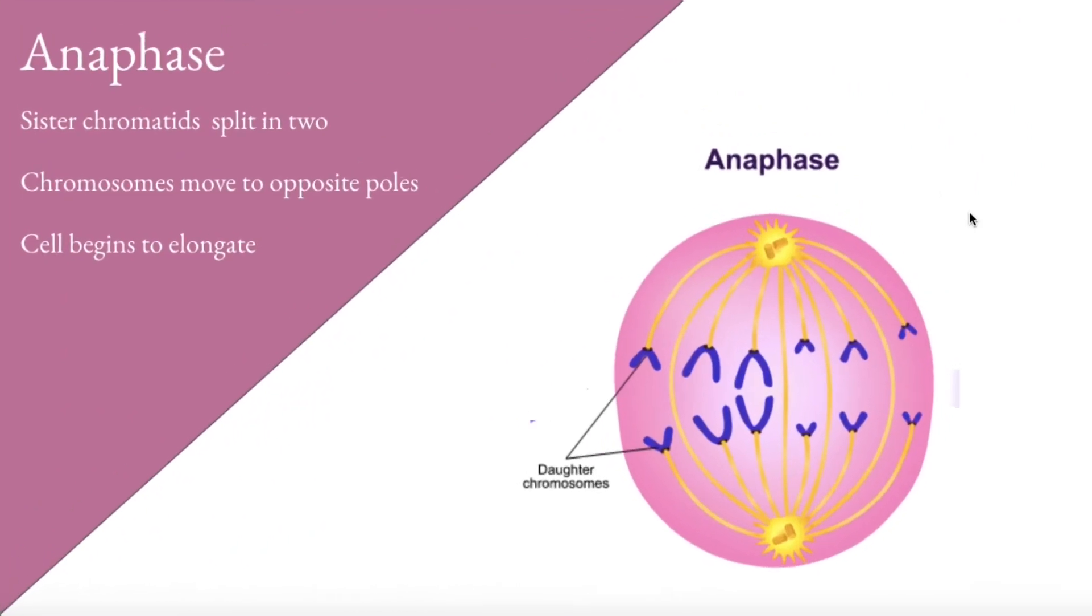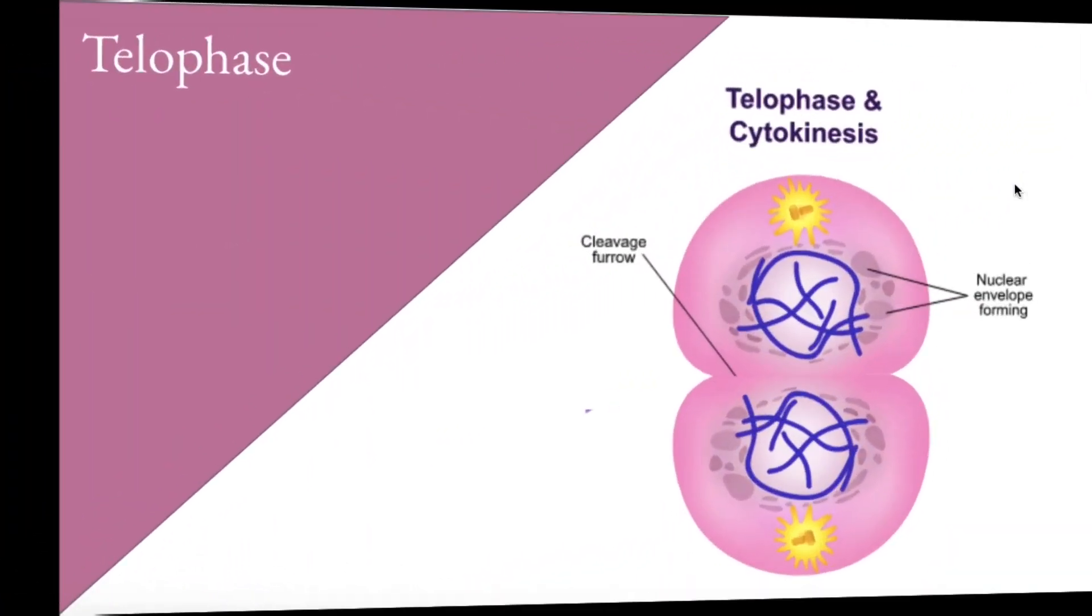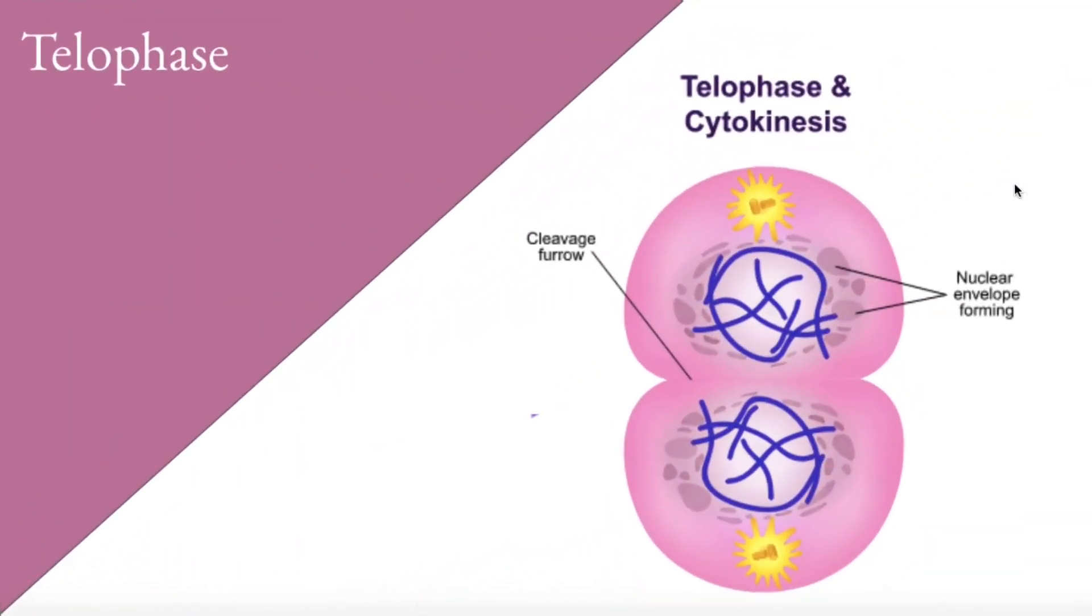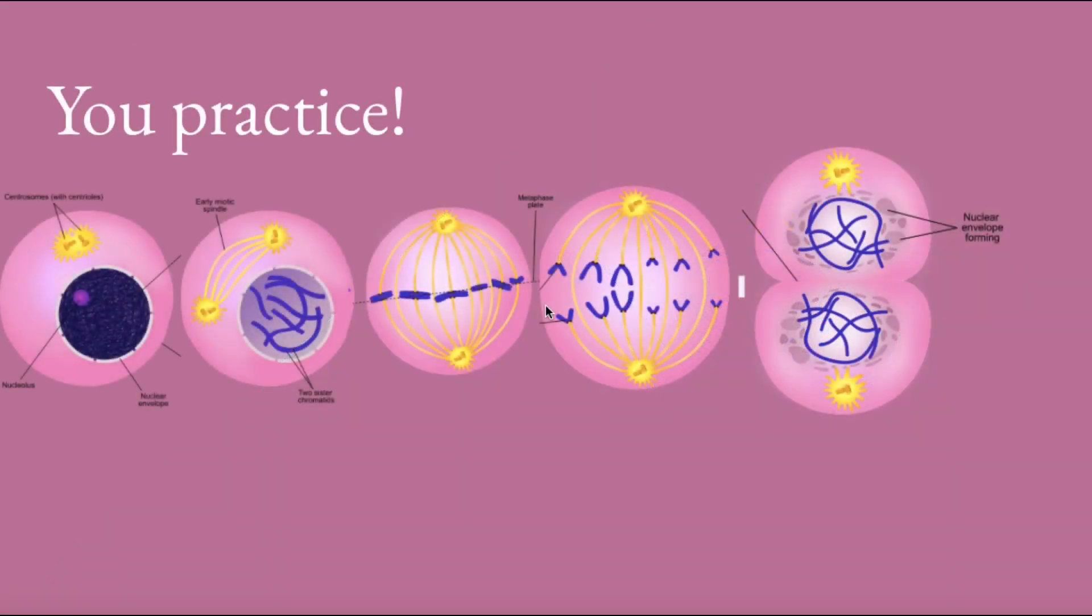Then it enters the anaphase where the two sister chromatids split. They move to the opposite poles by these fibers shortening and moving towards the centrioles. And you'll see that the cell begins to elongate before it enters the last phase called telophase. Telophase is where the nuclear envelope reforms. Once the nuclear envelope reforms, proteins are made to help with this cleavage furrow and cytokinesis, which is the cytoplasm making two new cells.